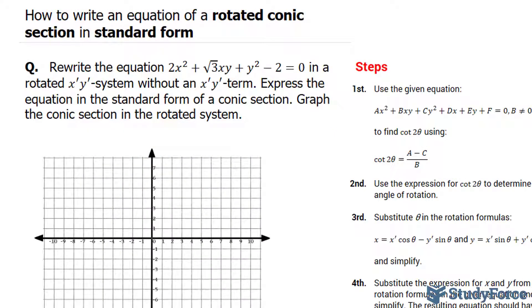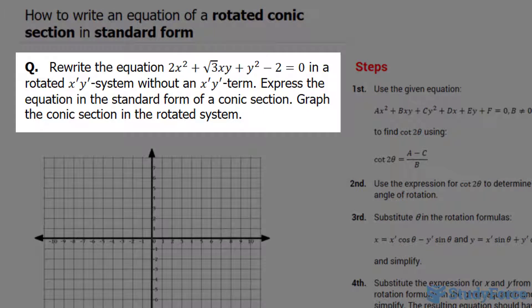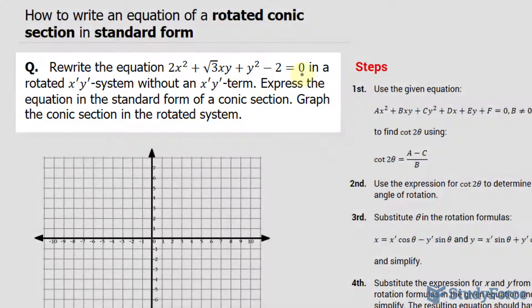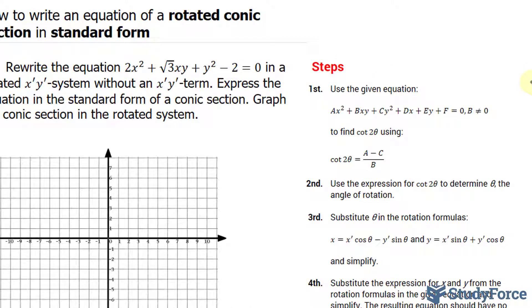In this tutorial, I'll show you how to write an equation of a rotated conic section in standard form. The question reads: rewrite the equation shown on your screen in a rotated x prime, y prime system without an x prime, y prime term. Express the equation in the standard form of a conic section, and then graph the conic section in the rotated system. The steps to doing this are shown to the right of your screen.